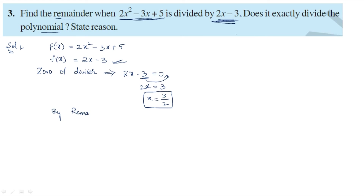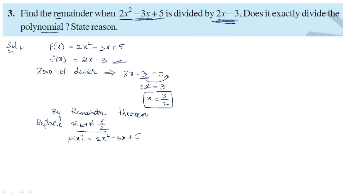By the remainder theorem, we replace x with 3 by 2. So p of 3 by 2 equals 2 times (3 by 2) whole squared minus 3 times (3 by 2) plus 5.